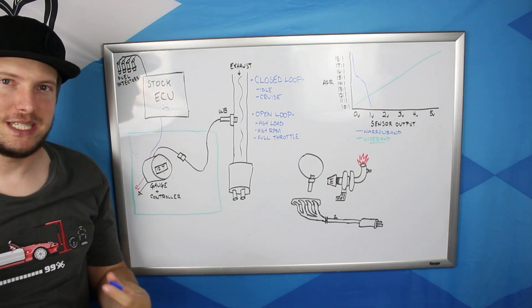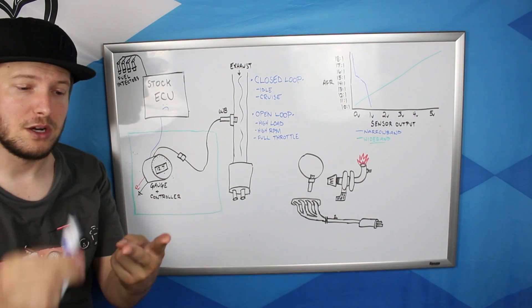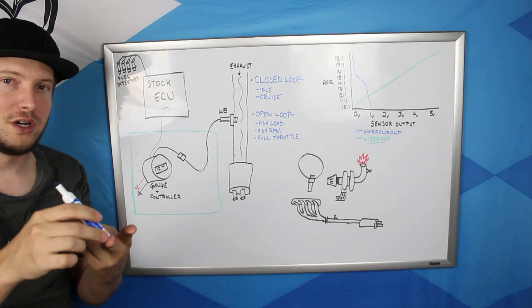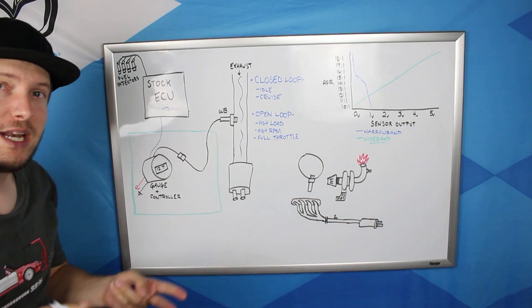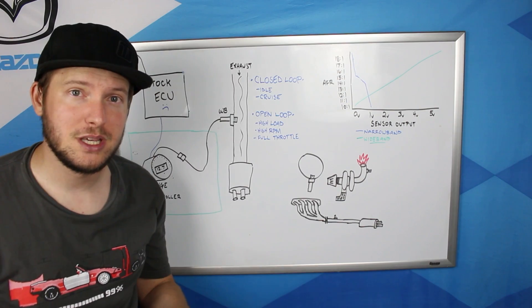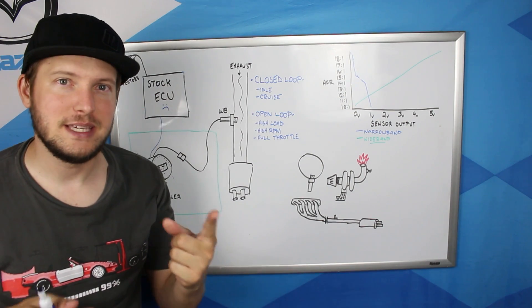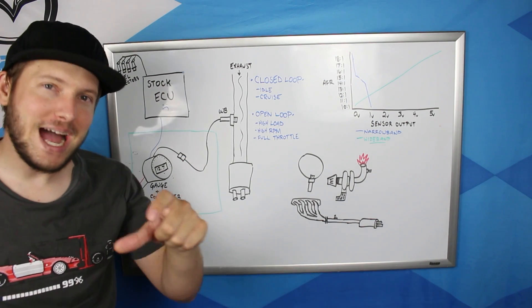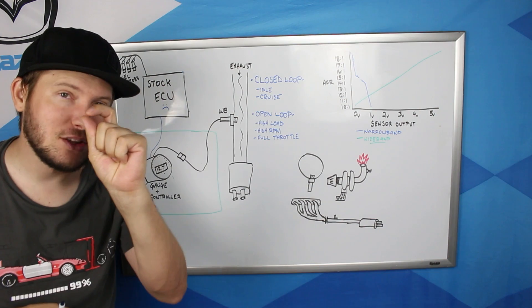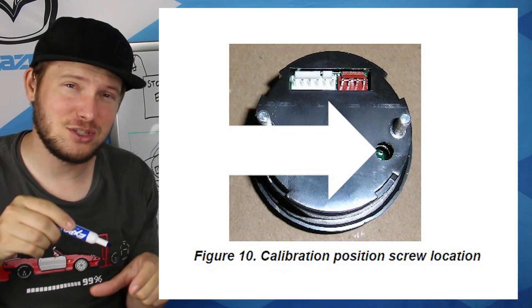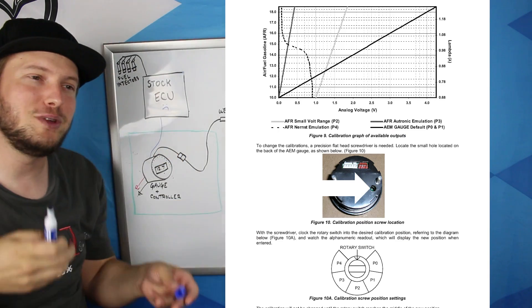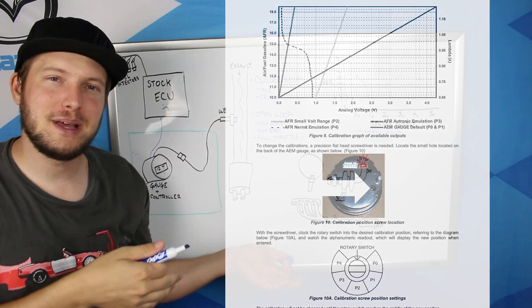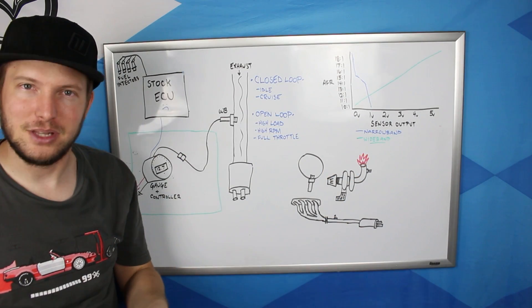Where a lot of people mess this up is different widebands do this a little bit differently. I know on the original Innovate MTXL, there were two different wires, brown and yellow. One was wideband signal and the other one was narrowband emulation. Now on the AEM UGOs, there's only one signal wire that goes to the ECU, but on the back of the gauge, there's a tiny little switch. You need a tiny little flathead screwdriver and it's got different modes that you can set it to. And you need to tell it, are you putting out a wideband signal or a narrowband emulation?